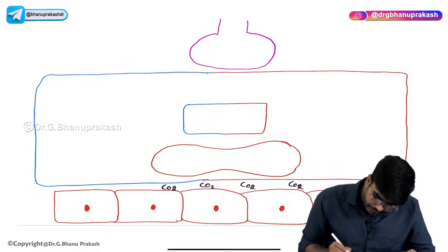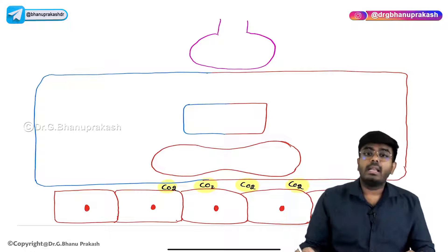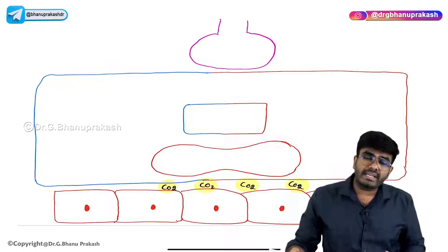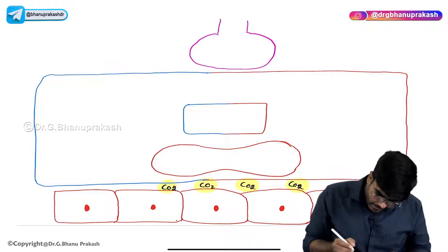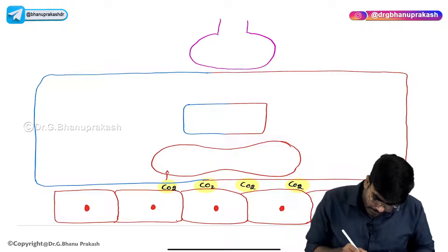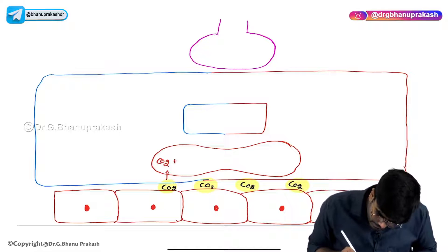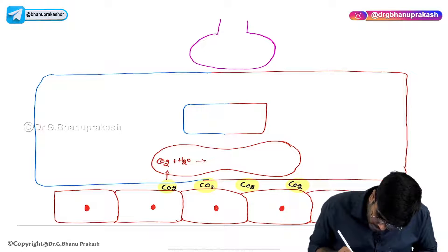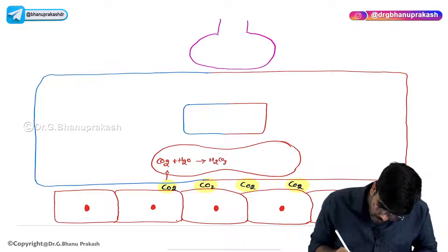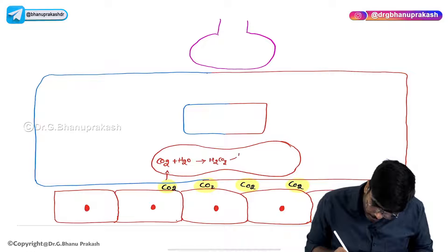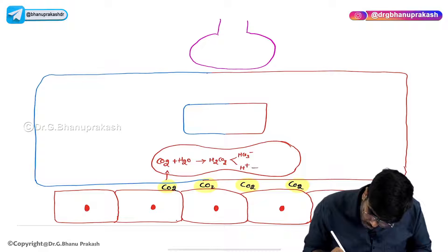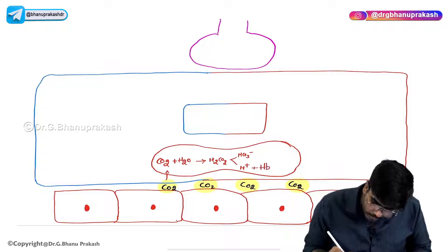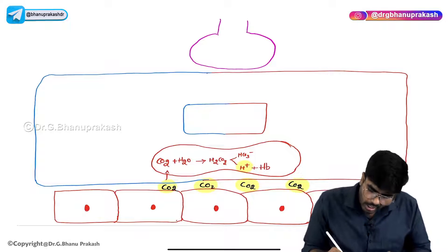Carbon dioxide is produced at the level of tissues. This carbon dioxide enters into the RBC. Inside the RBC there is water, so CO2 + H2O gives rise to H2CO3 (carbonic acid). Now this H2CO3 splits into HCO3- (bicarbonate ions) and H+ protons. Unnecessarily protons are getting generated inside the RBC, which is not good. So these protons will bind with hemoglobin.